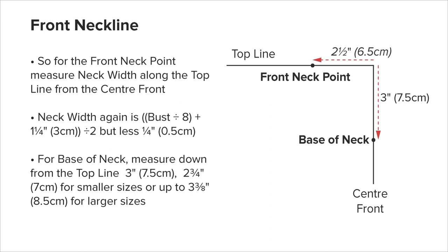The front neckline: from the center front line, measure the neck width along the top line. This is again the bust measurement divided by 8 plus 1.25 inches or 3 centimeters, and then halved. But this time we deduct a quarter of an inch or 0.5 centimeters. This makes the front neck width a quarter of an inch or 0.5 centimeters less than the back neck width. This helps the neckline to sit correctly. Label this point the front neck point. From the top line, measure down the center front 3 inches or 7.5 centimeters and label base of neck. This measurement can be 2.75 inches or 7 centimeters for smaller sizes, or up to 3.75 inches or 8.5 centimeters for larger sizes.